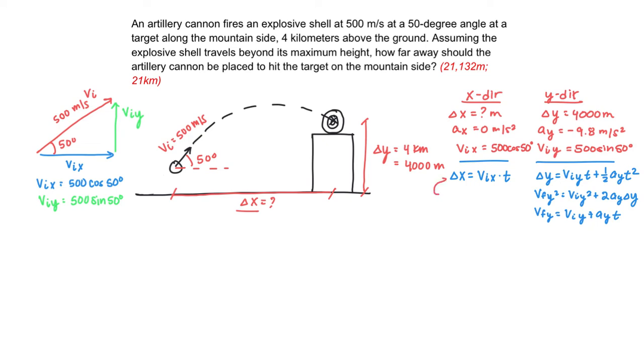I only have one equation that has delta X in it, and it's going to be this one. Now, to get delta X from this equation, I need to know two other variables. My initial velocity in the X direction and the total time the object is in the air for. Please note that we already know VIX, because we knew our initial velocity and our initial launch angle. So, all we need to do is solve for time.